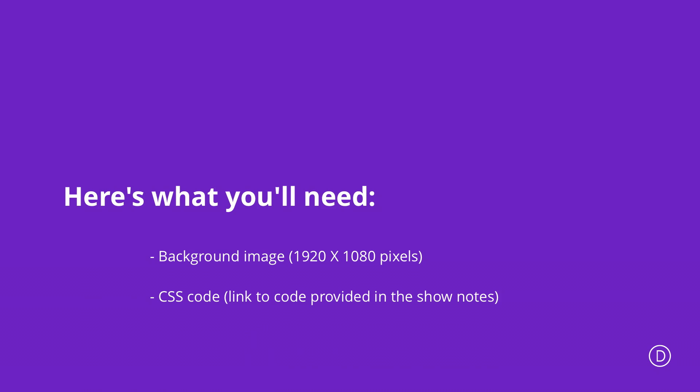There are a few elements that we're going to need in order to complete our tutorial. Firstly, we're going to need a large image of 1920 by 1080 pixels, and also we'll be using some CSS code to make some minor adjustments. If you'd like this CSS code, it is linked in the show notes below.